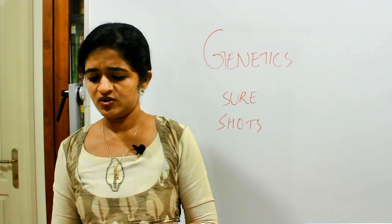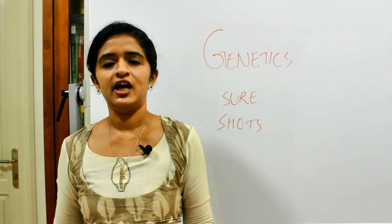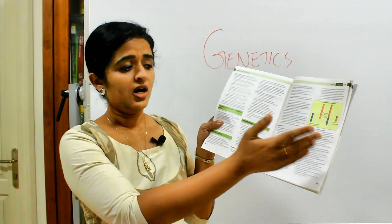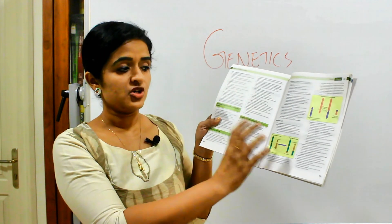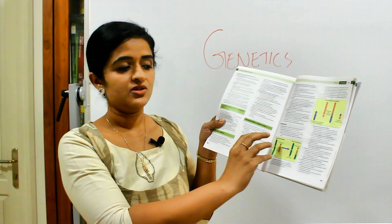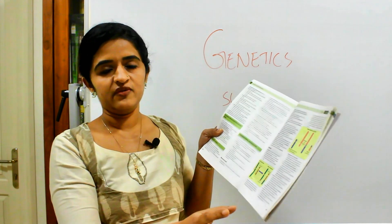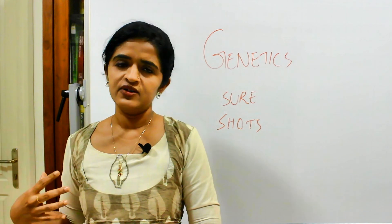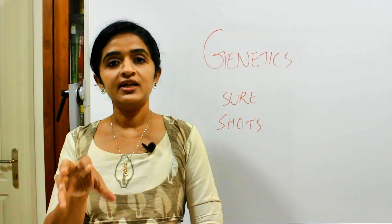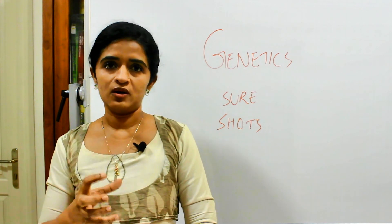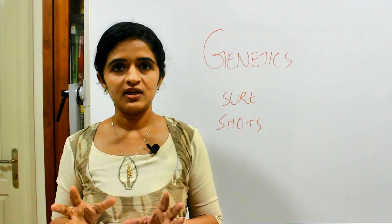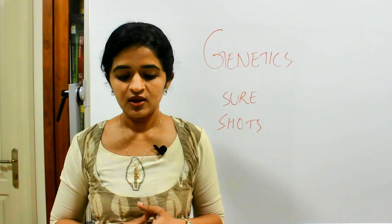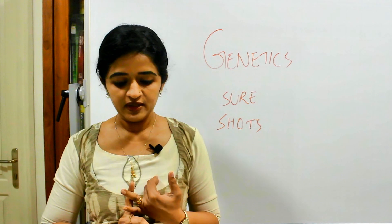When asked about translocation, please study with the help of a diagram. Show what Robertsonian translocation and reciprocal translocation mean using a diagram. If you draw one single diagram, it shows the evaluator you have understood the concept, even if you haven't written much. Please study these topics with the help of diagrams. Some syndromes usually asked from genetics are Klinefelter syndrome, Prader-Willi syndrome, and Angelman syndrome.